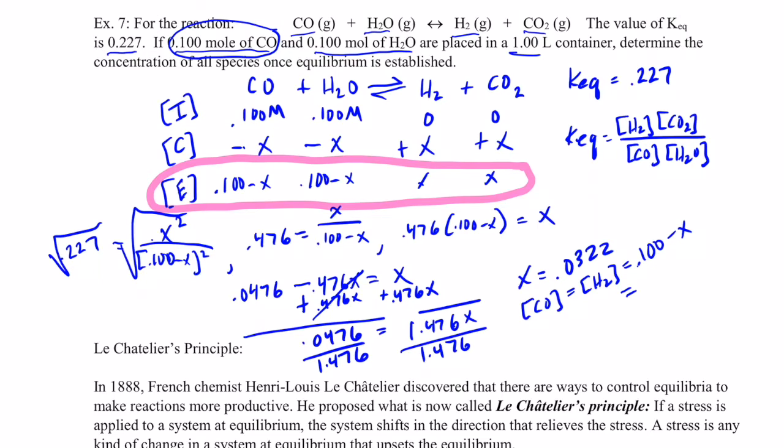And so that would be 0.100 minus our 0.0322. And that gives me 0.0678 moles per liter of hydrogen gas and carbon monoxide. Sorry, water vapor and carbon dioxide.